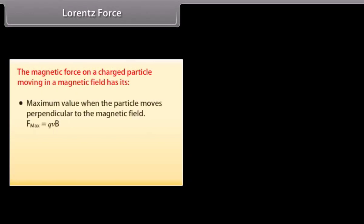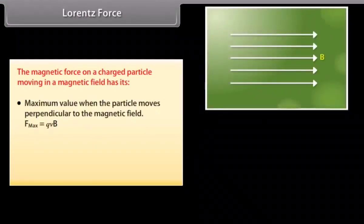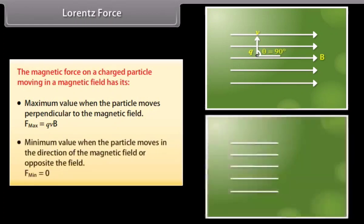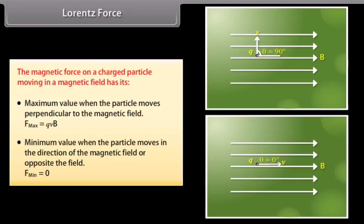The magnetic force on a charged particle moving in a magnetic field has its maximum value when the particle moves perpendicular to the magnetic field: F_max = QVB. The minimum value occurs when the particle moves in the direction of the magnetic field or opposite to the field: F_min = 0.